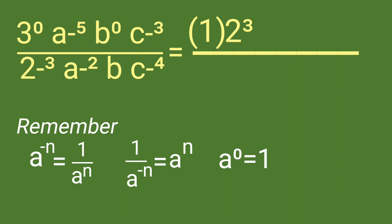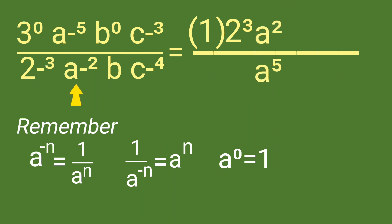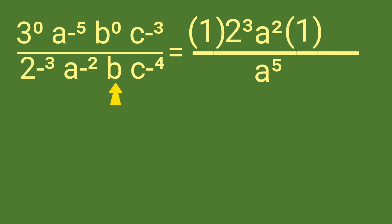Next is the variable a. We have a raised to negative 5 over a raised to negative 2, which can be transformed as a squared over a raised to 5. Next is variable b. We have b raised to 0 over b, which is written as 1 over b.